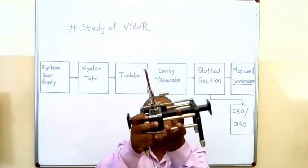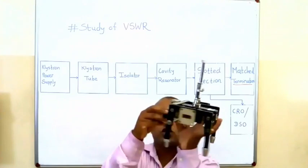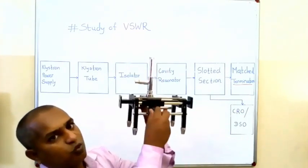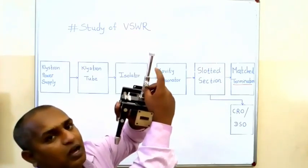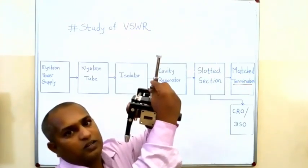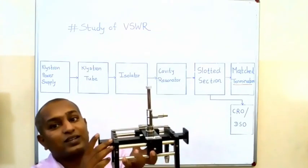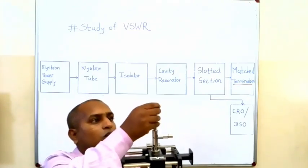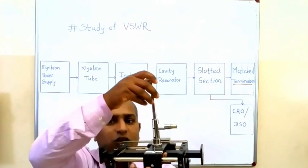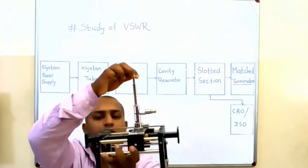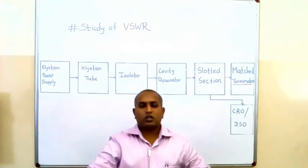In this slotted line section, this is our probe. We can vary the probe position using this knob. Inside the probe we are using a detector, and our detector is a Schottky Barrier diode. This probe is a tunable probe — we can change the input impedance of this probe. This portion is used to determine or match the impedance. The question is: how to determine VSWR using the slotted line section?